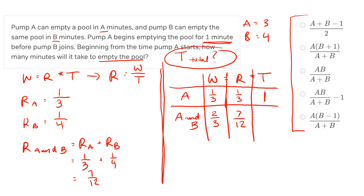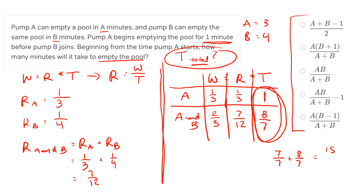Now in the second row I have two of the three pieces: work is two thirds and rate is seven over twelve. Setting up the equation two thirds equals seven over twelve times T and isolating for T, you end up with eight over seven as the time for A and B working together. We can verify: seven over twelve times eight over seven — the sevens cancel, giving eight over twelve, which reduces to two thirds. Now the total time is one plus eight over seven, which is seven over seven plus eight over seven, giving fifteen over seven.